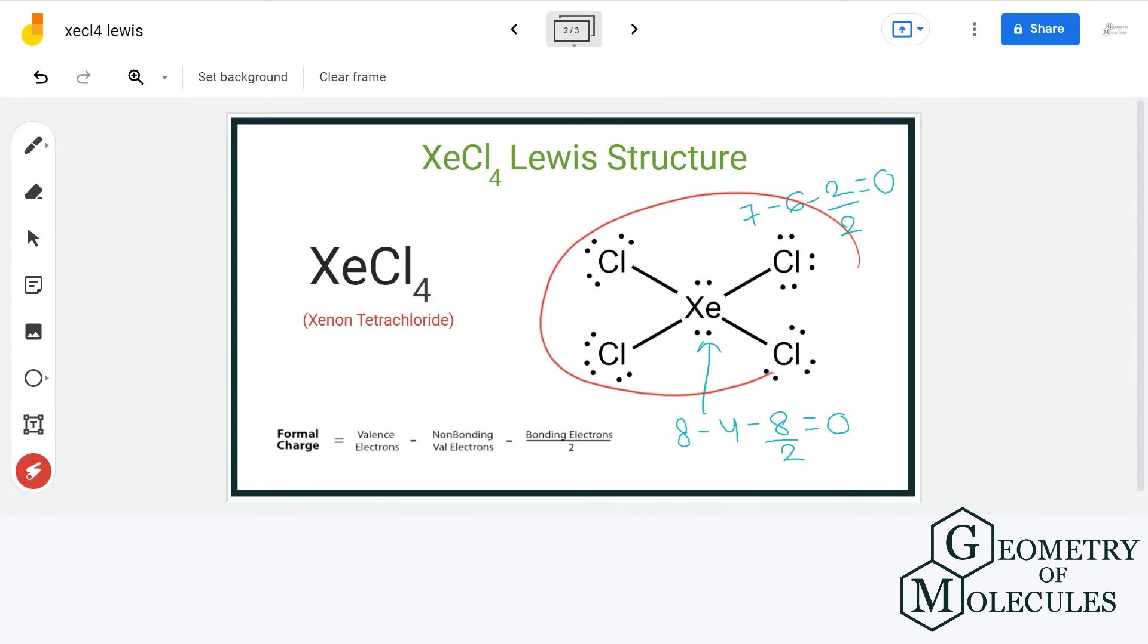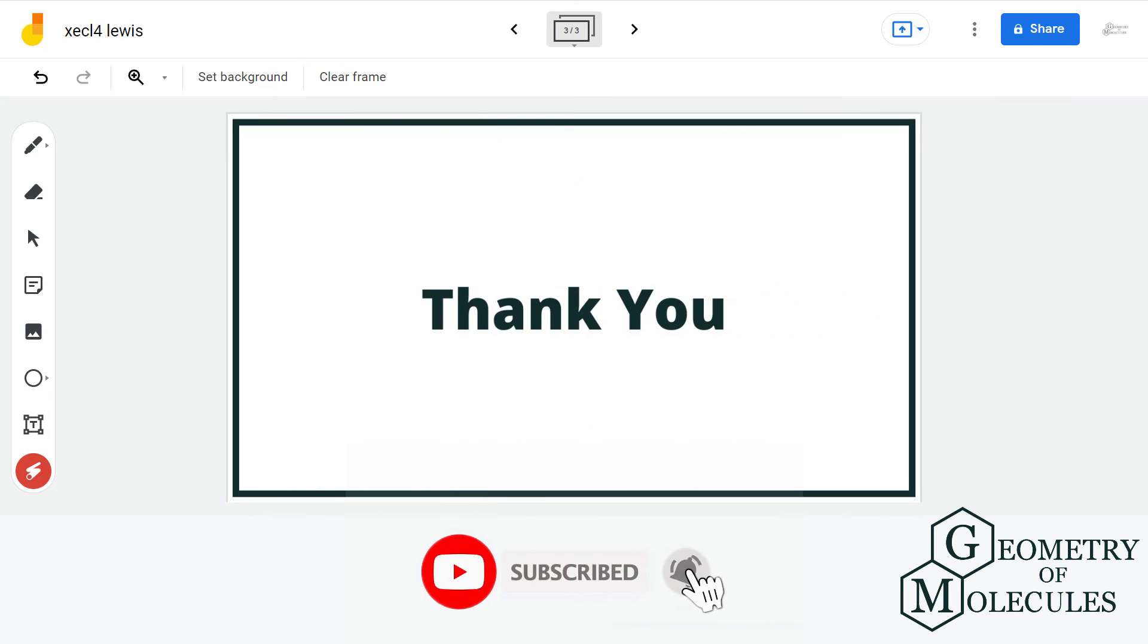Each atom in this molecule has 0 formal charge and thus we can say that this is the final Lewis structure of XeCl4. For more such videos make sure to subscribe our channel and thank you for watching.